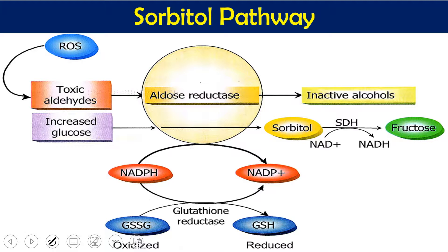In this detailed sorbitol pathway, aldose reductase converts glucose to sorbitol, and sorbitol dehydrogenase converts sorbitol to fructose — with aldose reductase requiring NADPH. Two key points: first, sorbitol accumulates because it is not sufficiently converted to fructose. Sorbitol is hygroscopic — it absorbs moisture and water from surrounding tissue, causing the cells which contain sorbitol to swell up.